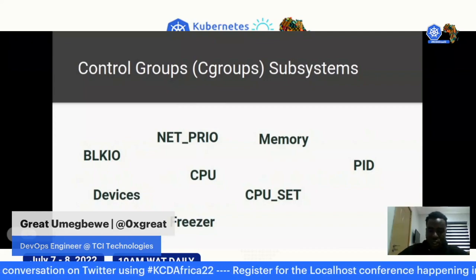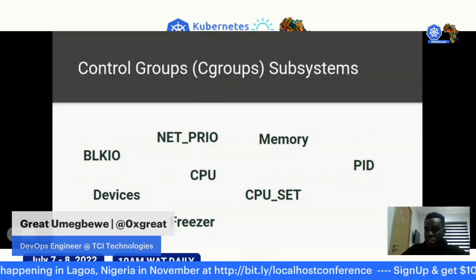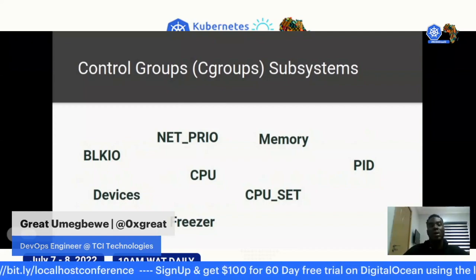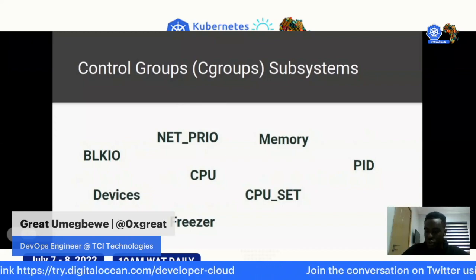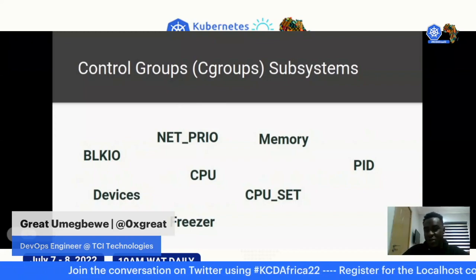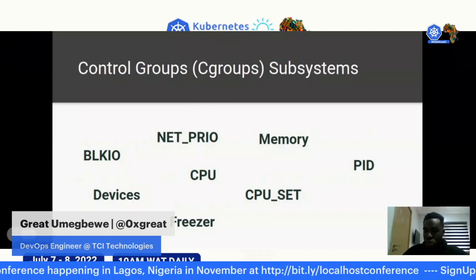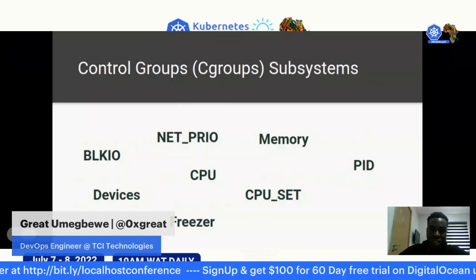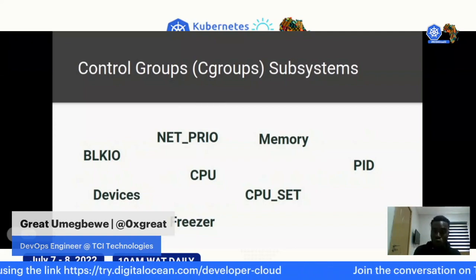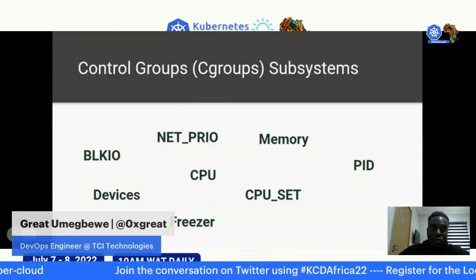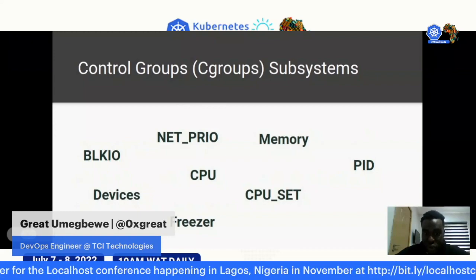The PID namespace is what makes containers think they have isolation. For example, an nginx container might be running with a PID of 4 or 5 inside the container, but outside that container on the whole system it runs as a different PID. This is what fools containers into thinking they are in control of their own environment.